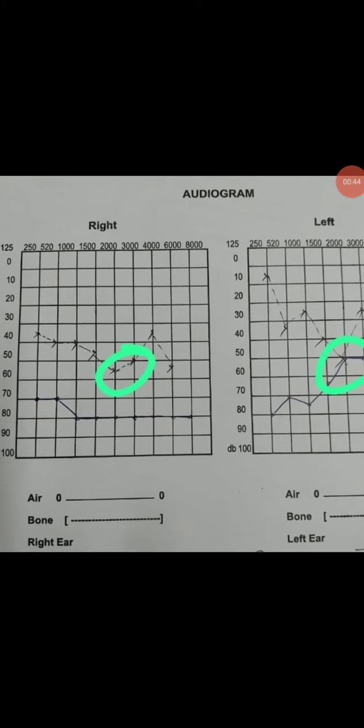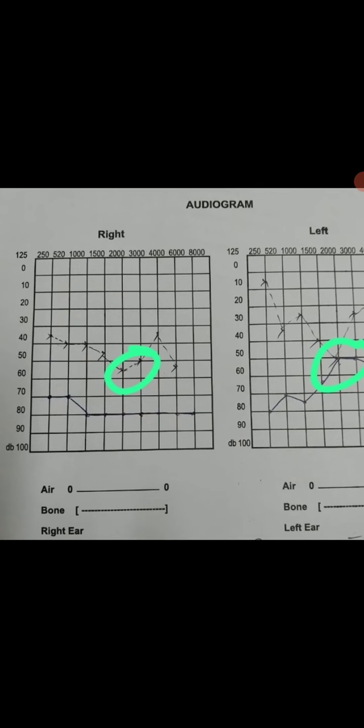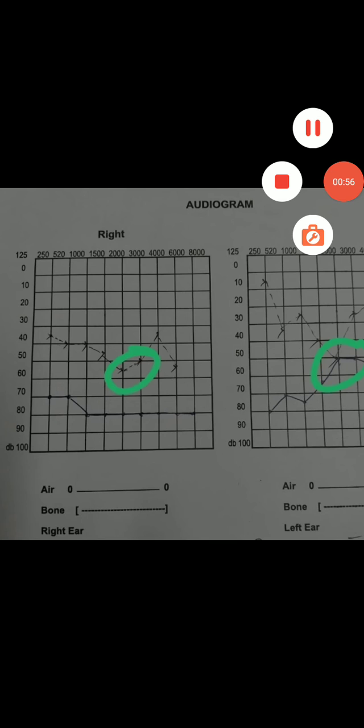This is a bilateral condition. In both the sides we can see the Carhartt's notch, both the ears. This is due to the lack of pivoting movement of the malleus upon the incus, resulting in Carhartt's notch.